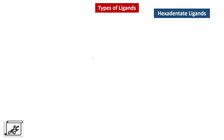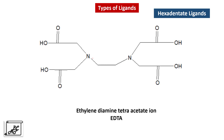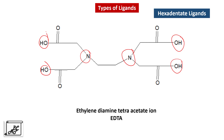Let's move to hexadentate ligands. A famous example is EDTA — ethylenediamine tetraacetate ion — which has six points of attachment. Through these six donor atoms, EDTA can hold the central metal atom very firmly, making the complex highly stable. As the denticity of the ligand increases, the stability of the complex also goes on increasing.